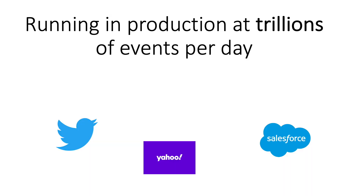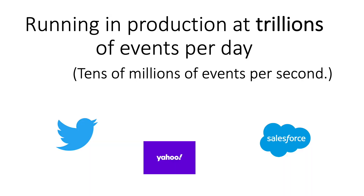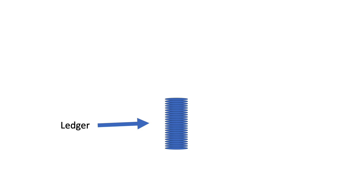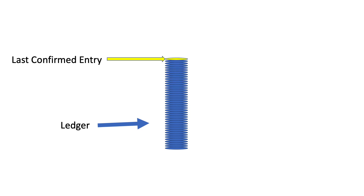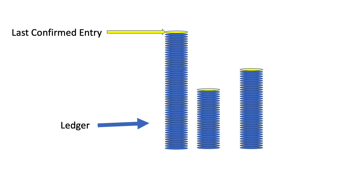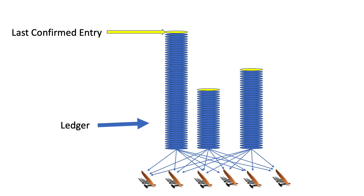Let's talk about Apache Bookkeeper. There are companies running Apache Bookkeeper at massive scale — tens of millions of events per second. It's stable, mature, robust, and very performant. Bookkeeper is based on the concept of ledgers, which are designed for sequential writes. At the top of the ledger is the last confirmed entry, and new entries are appended. Instead of keeping each ledger in its own location, data is striped across storage with replication, making it resilient to failure and also very performant.